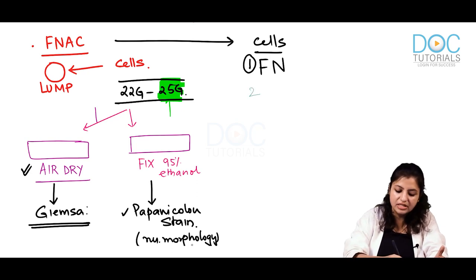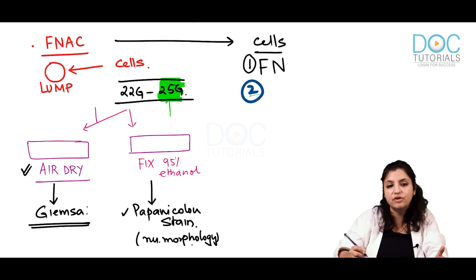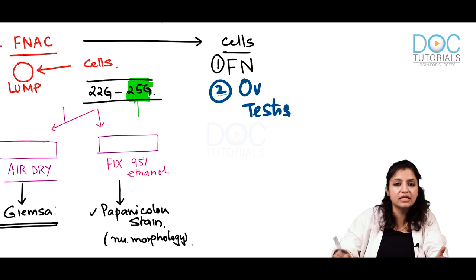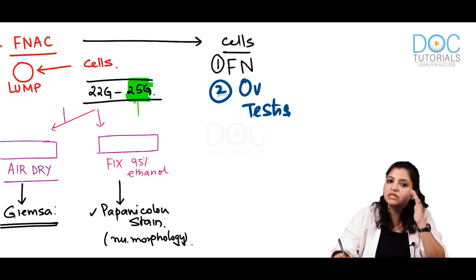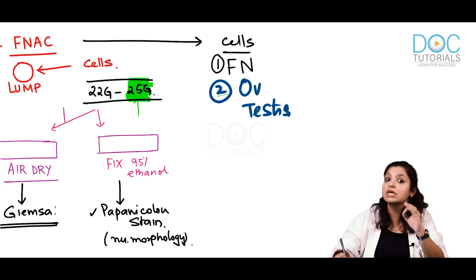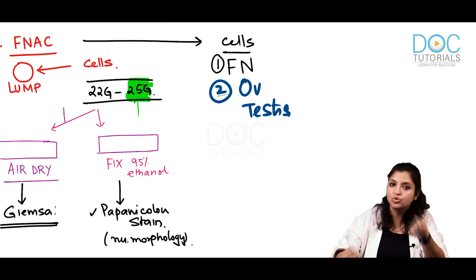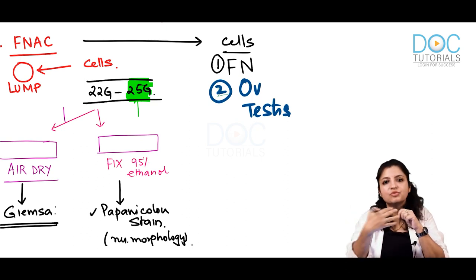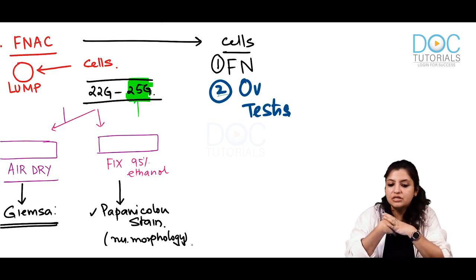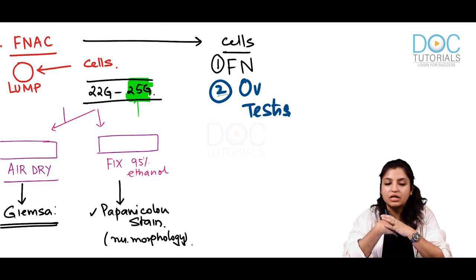Second, in some organs we should not do FNAC at all — like ovarian and testicular lesions. If you do FNAC in testicular tumors, it will metastasize; cancer cells will travel along the needle track and involve the skin of the testis, upgrading the tumor.